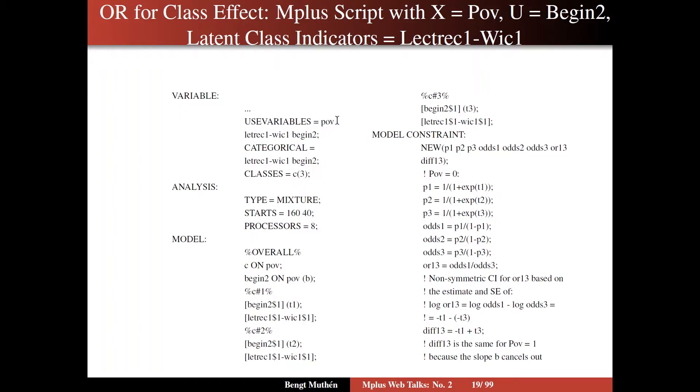In the variable command, we have the use variables as the poverty covariate and the latent class indicators, letter recognition to words in context, and then the distal outcome. We're saying that the indicators and the distal outcome are categorical. We're looking at three classes. We do a mixture type of analysis with a moderate number of starting values and processors equal to 8 to make it go faster. In the overall part, we regress C, the latent class variable, on poverty, the X variable, and we regress begin 2 on poverty as well.